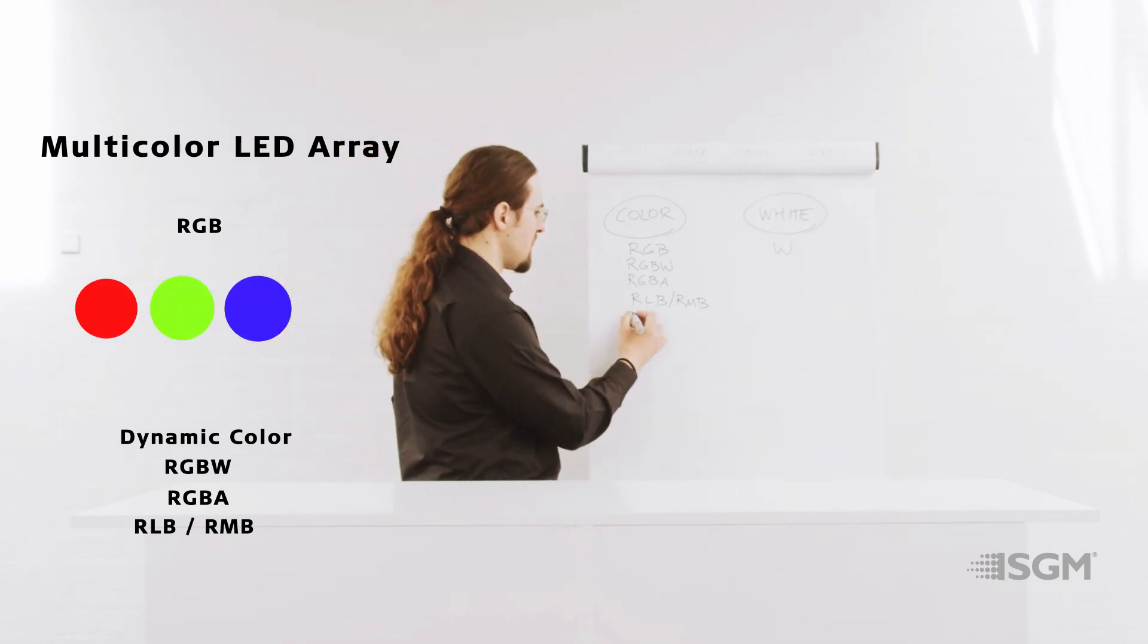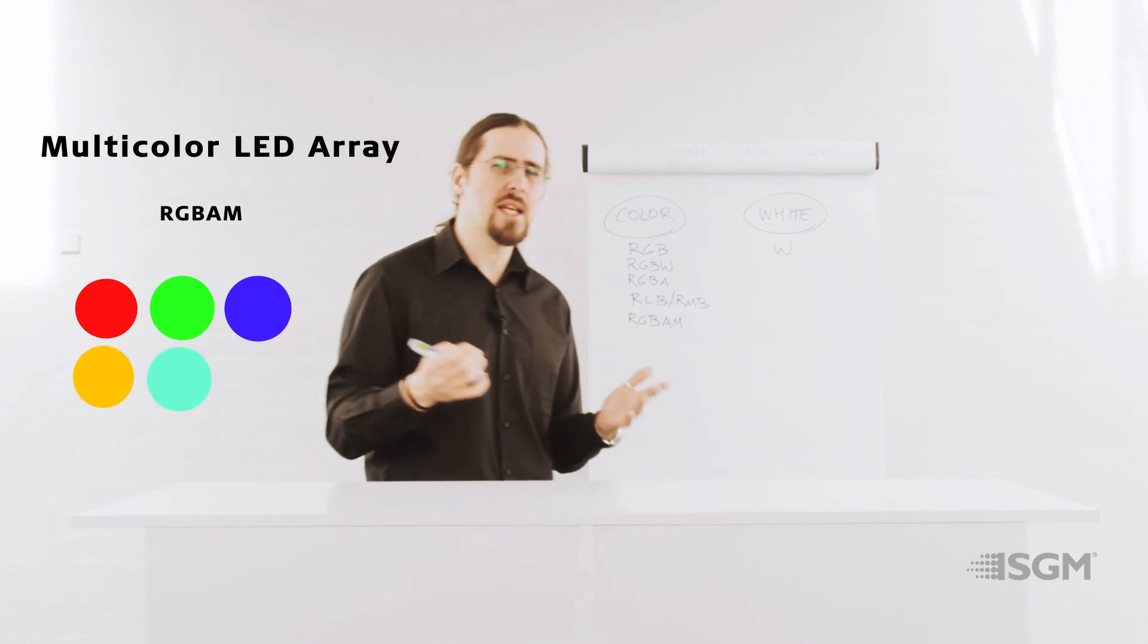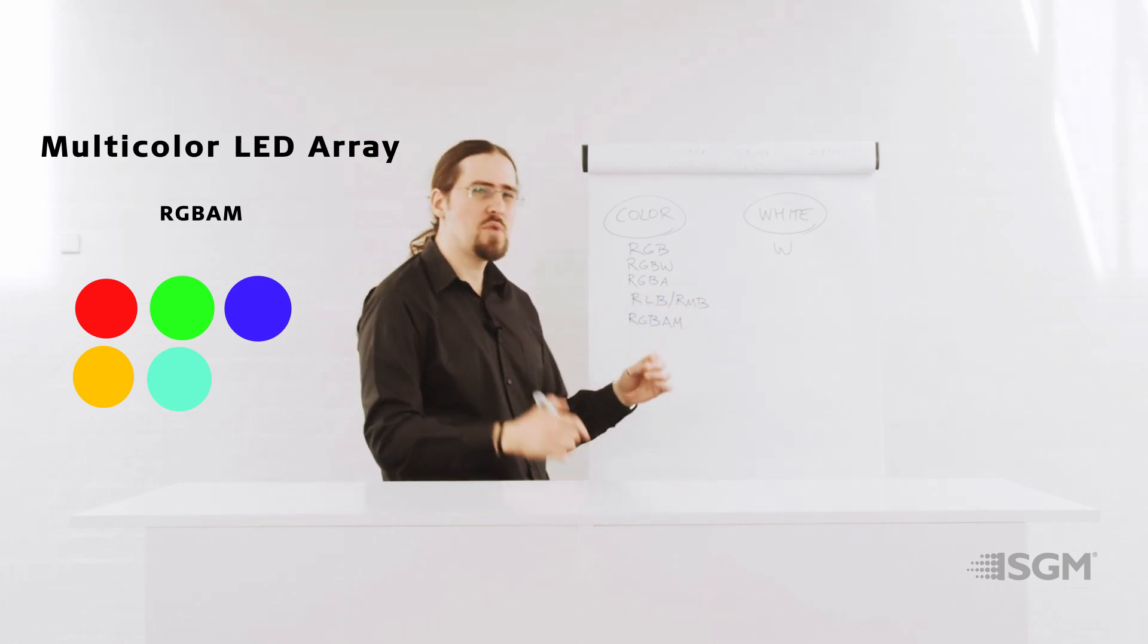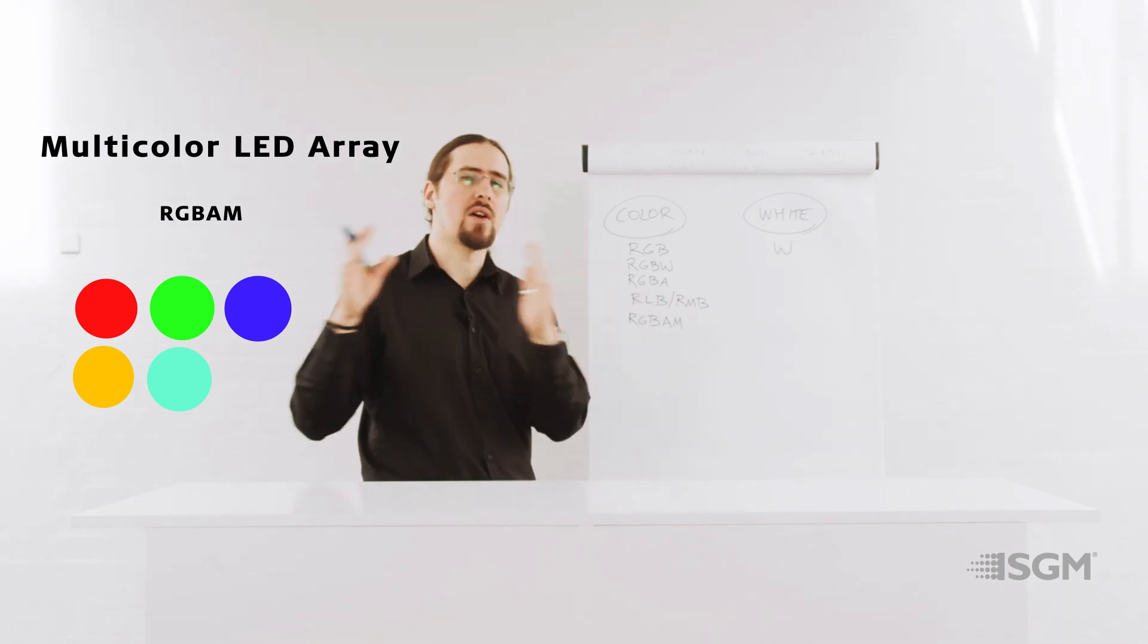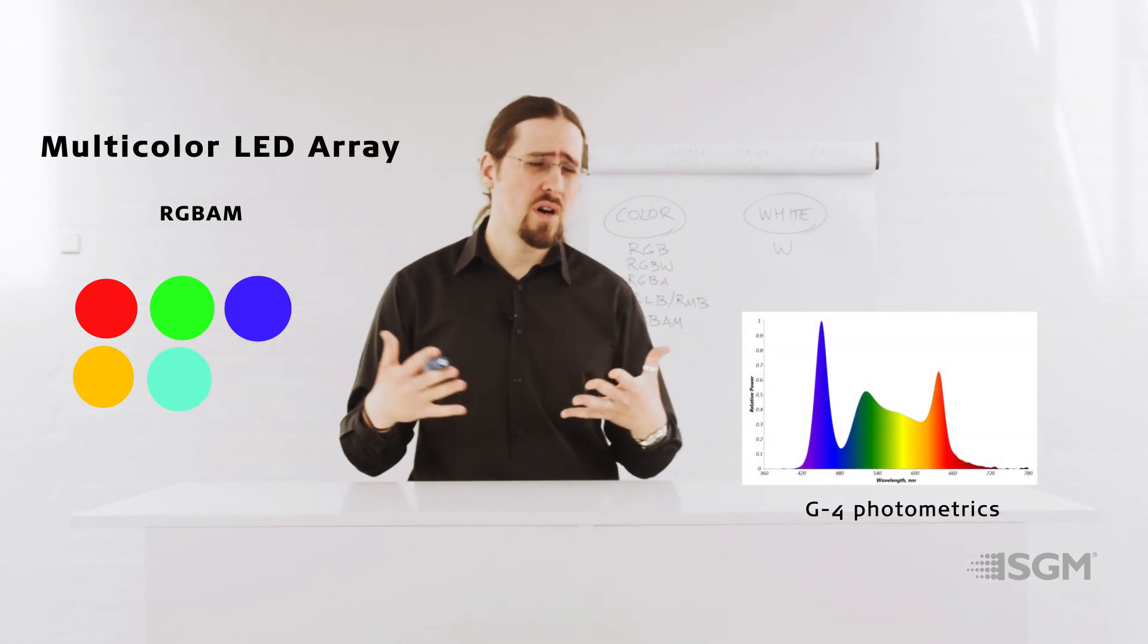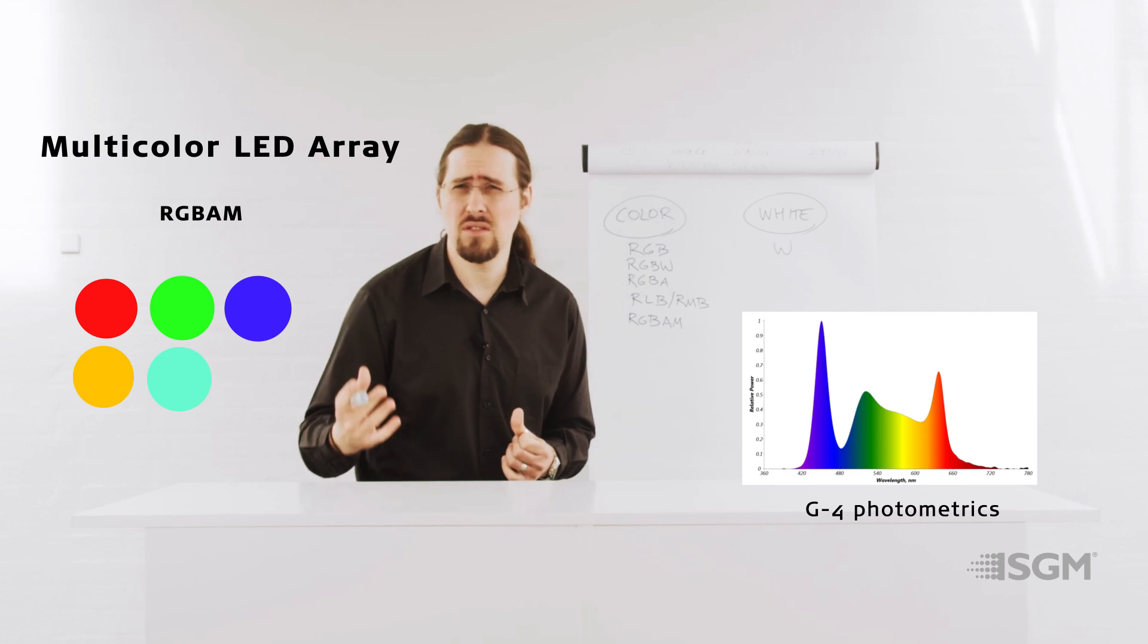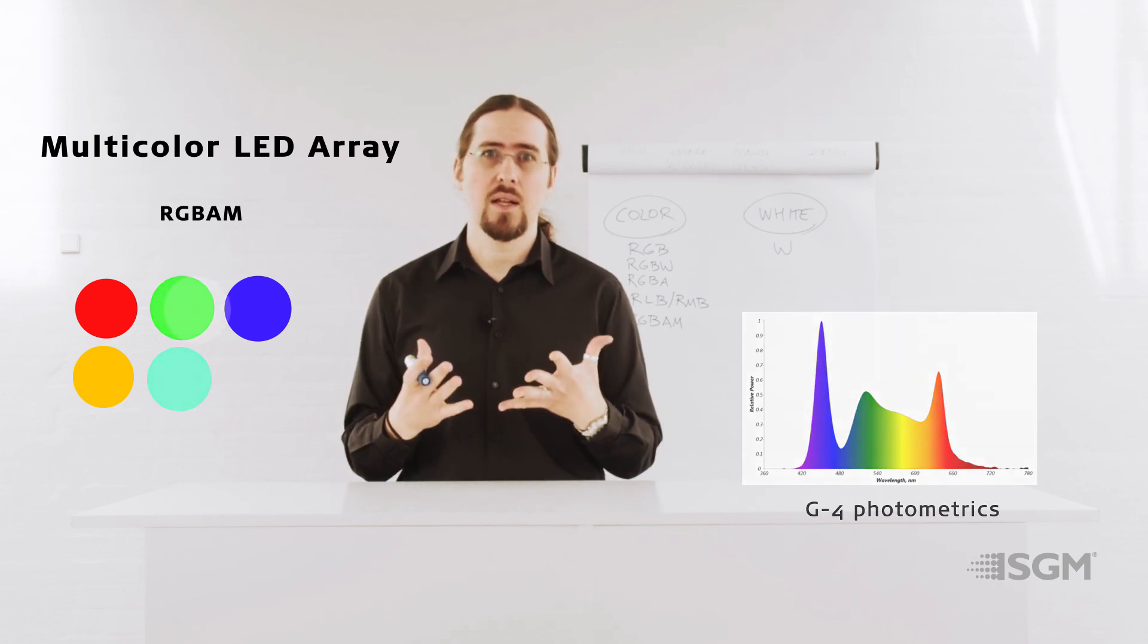Another type of LED array is the RGB plus amber plus mint. And here we are combining two of the things that we saw. With the amber you are filling a part of the spectrum, with the lime or the mint, which is mainly in the same part of the spectrum, you are filling another gap. So here you are filling two gaps, and by filling these gaps, what you are doing is that your color spectrum is more constant and more suitable for TV recordings or fashion events where you need to reproduce the colors that the people are wearing in a very accurate way.